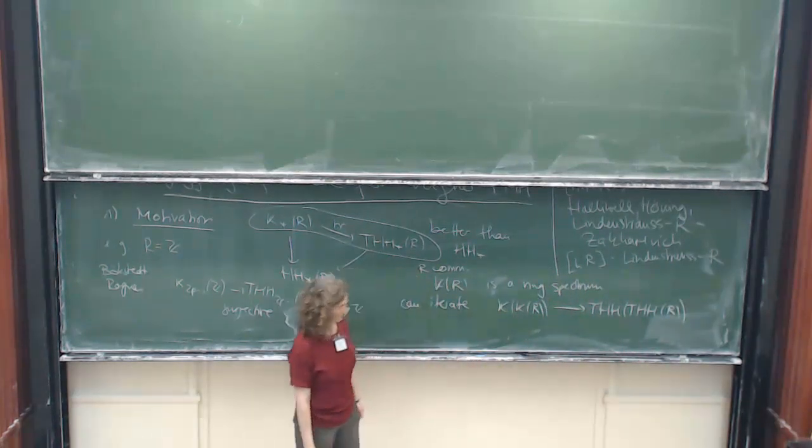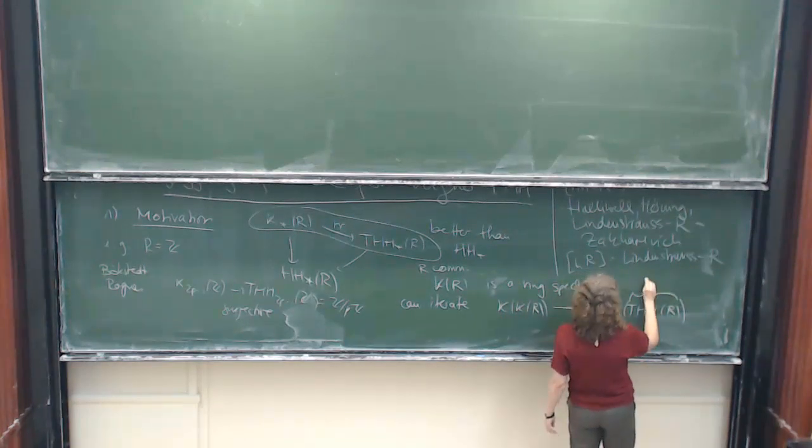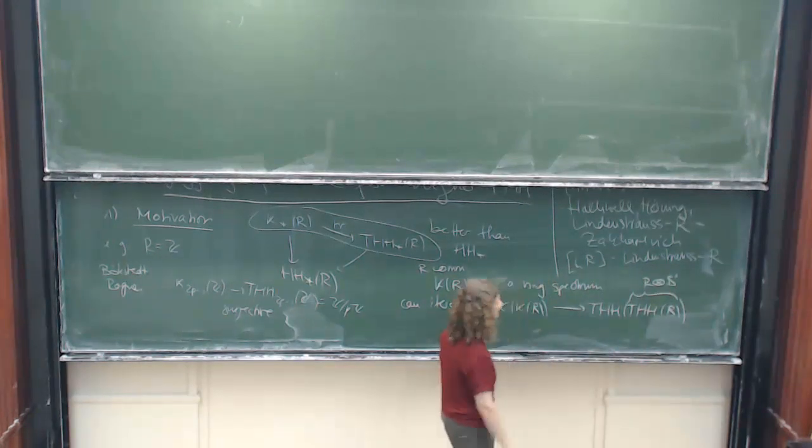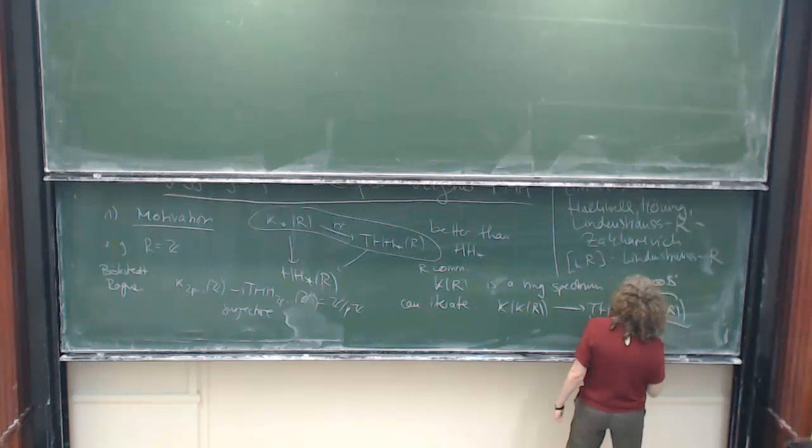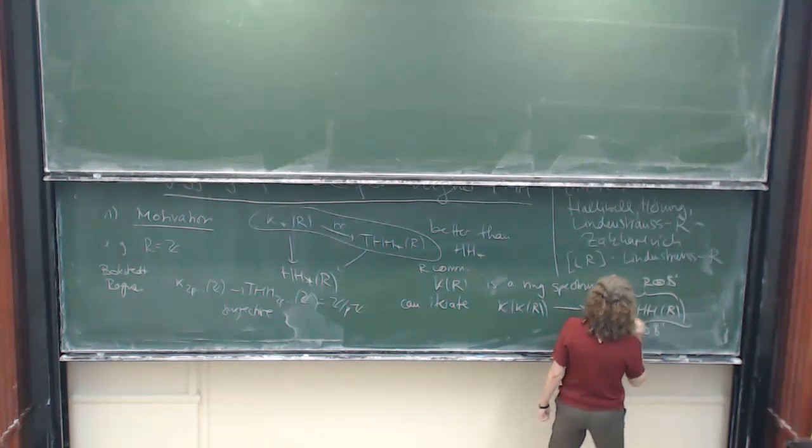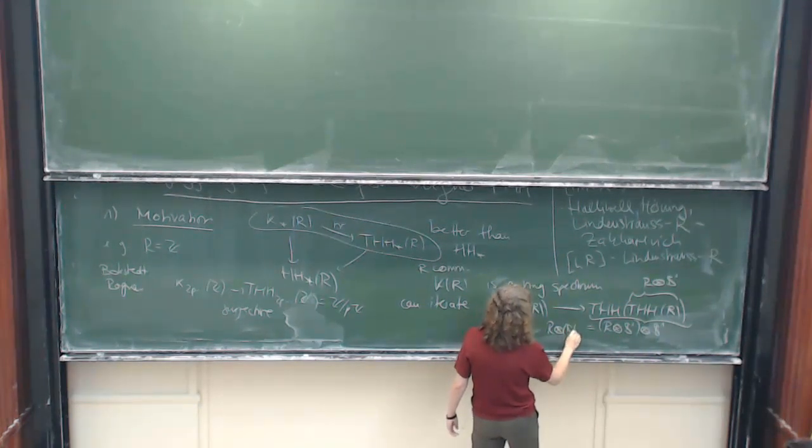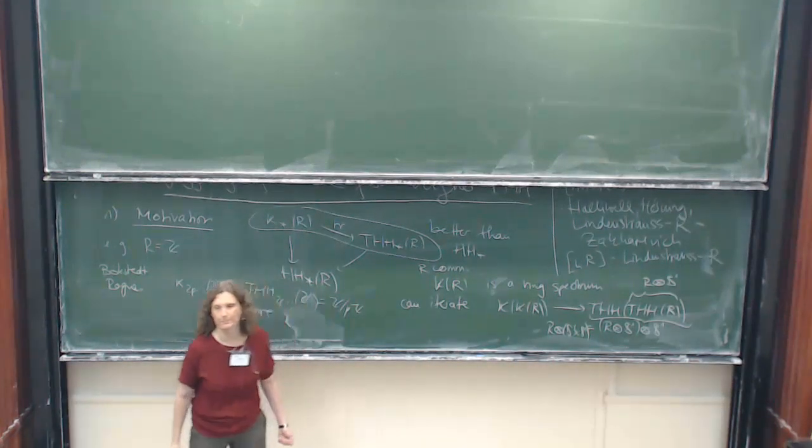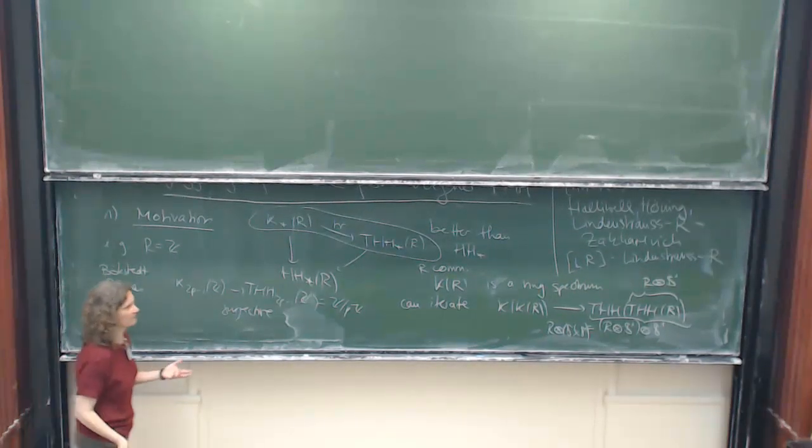And then there's old work already saying that this is actually just gluing copies of R to S1. So this is R tensor S1 tensor S1. And then abstract nonsense tells you that this is just tensoring now with a torus instead of a sphere.